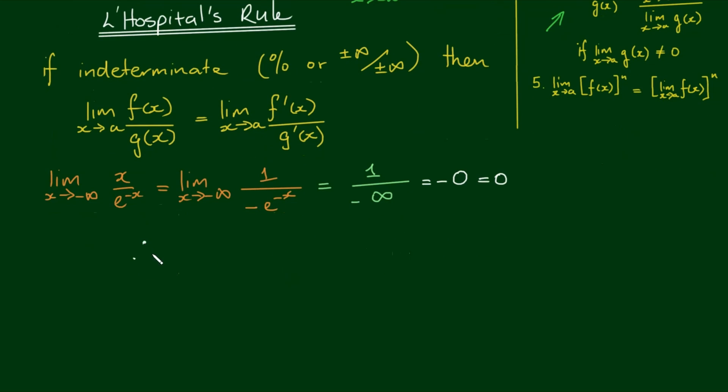So therefore, the limit as x approaches negative infinity of x by e to the x is equal to 0. So we'll box this answer, and you can keep this in your table of limits for future reference.